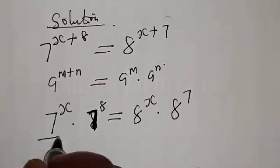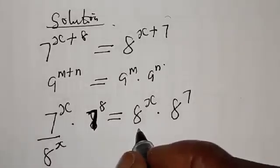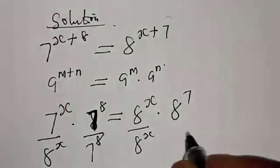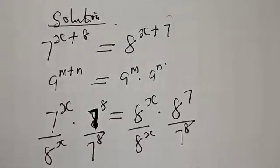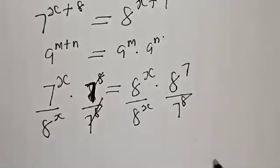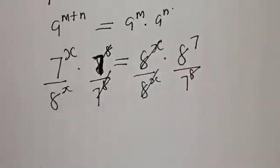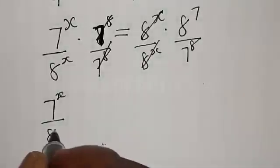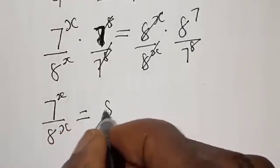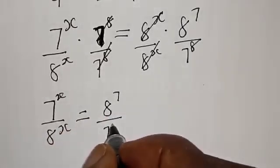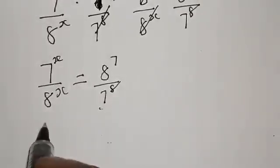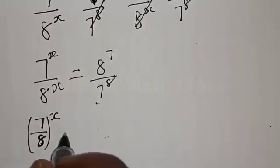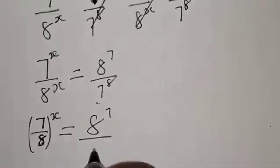Then let's divide both sides by 8 raised to power x. Also divide by 7 raised to power 8. Therefore, the x terms will cancel, and we are left with 7 raised to power x over 8 raised to power x is equal to 8 raised to power 7 over 7 raised to power 8. This can be rewritten as 7 over 8, raised to power x, is equal to 8 raised to power 7 over 7 raised to power 8.